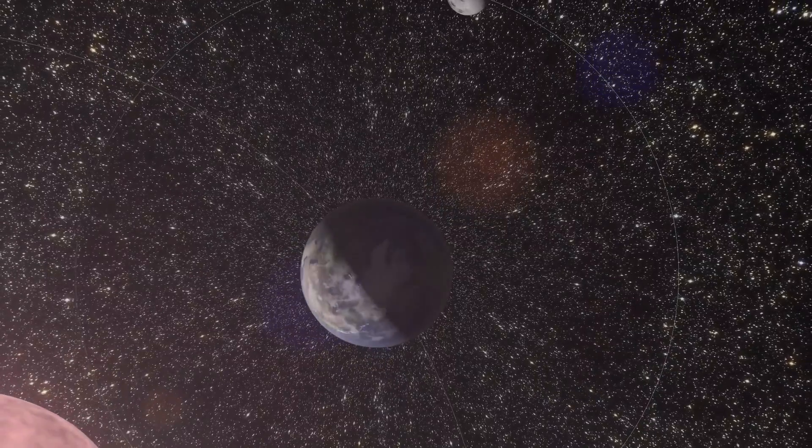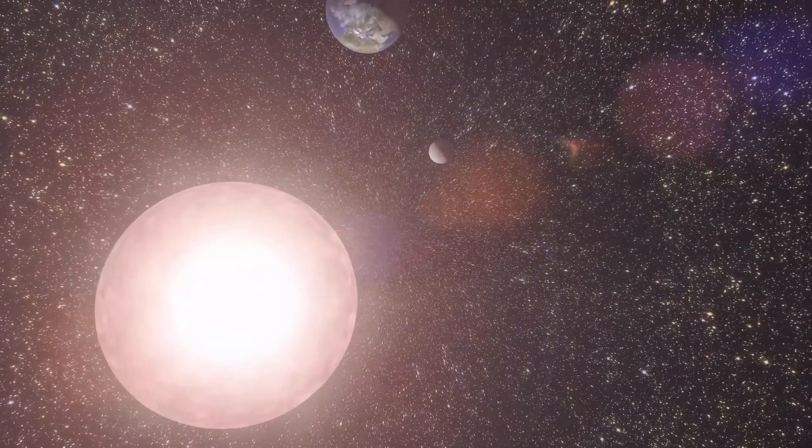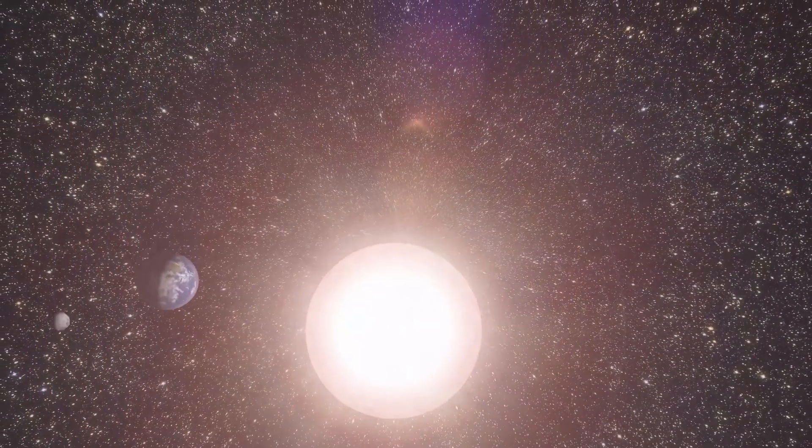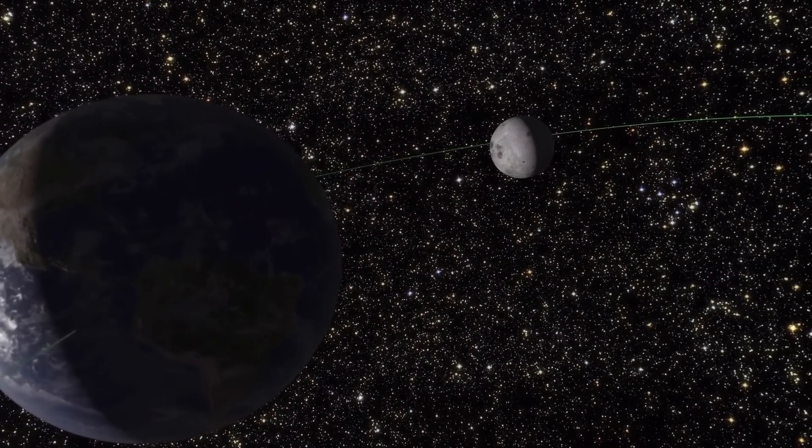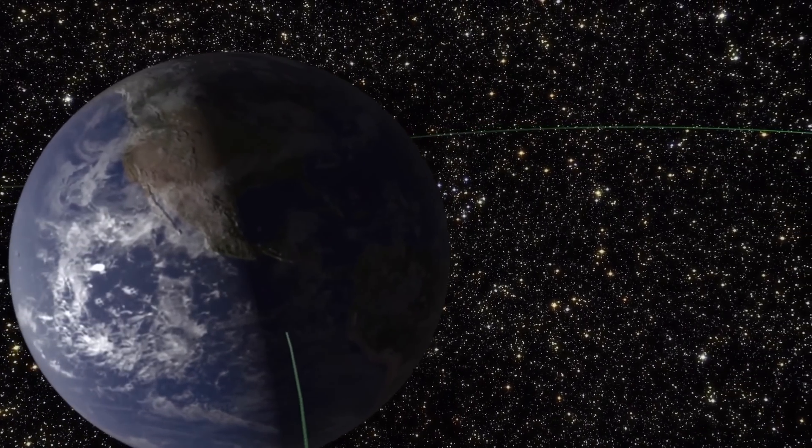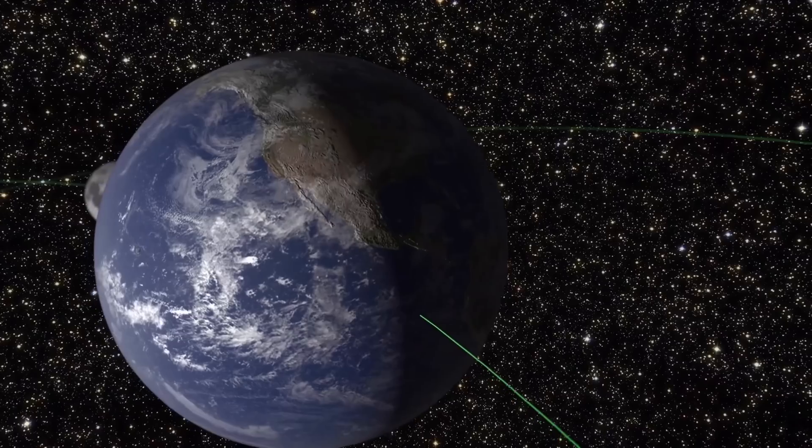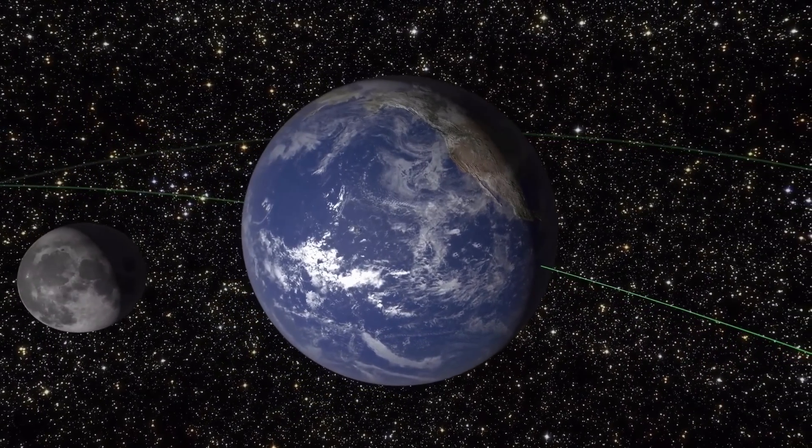The influence of tidal forces will make the period of the Moon's rotation around the Earth equal to that of the Earth's rotation around its axis. The same side of the Moon and Earth will always face each other. In 65 billion years, the speed of the Moon's rotation around its axis will slow down so much that the Moon will crash into the Earth.